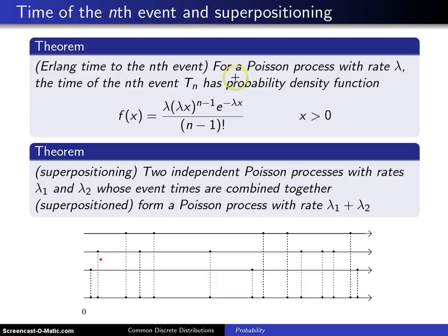Here's the first one. This says for a Poisson process with rate lambda, the time of the nth event has probability density function that looks like this. So notice this distribution has two parameters, and those two parameters are lambda, which is the rate of the Poisson process, and n, which is the event number you're interested in.